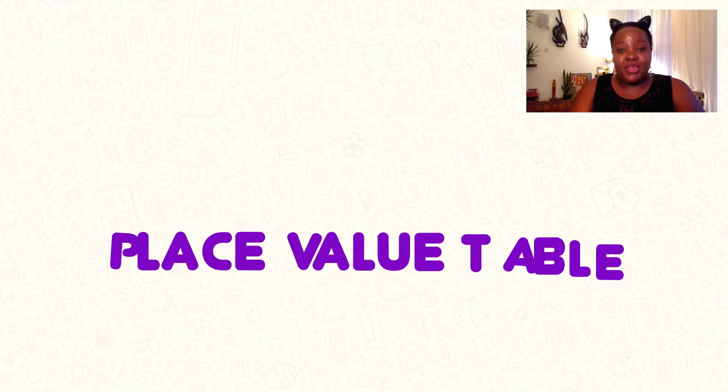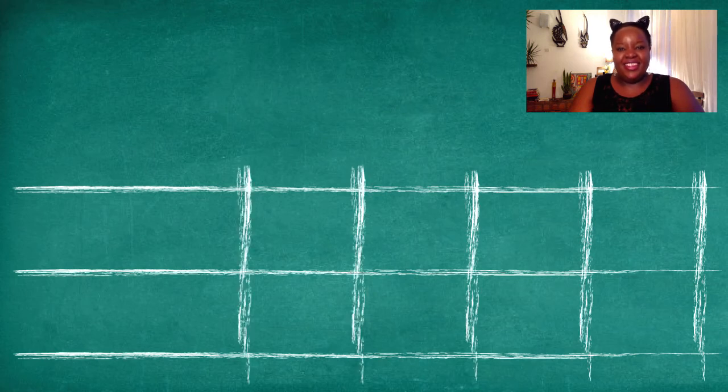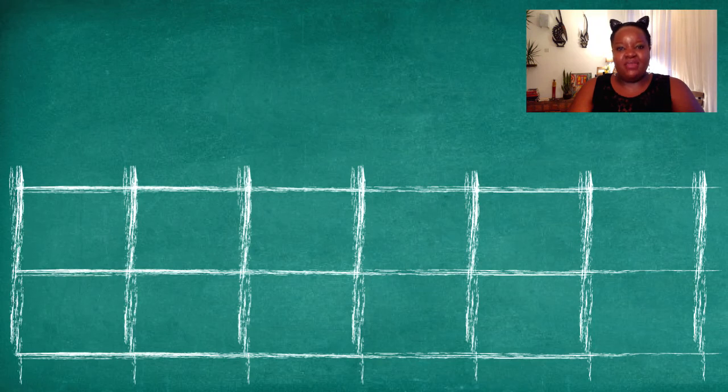To know the place value of a digit, we need to know and understand the place value table. Get your pens and paper ready. I want you to draw three lines from side to side — these are going to be our rows: one, two, three. Now I want you to draw seven columns from top to bottom, strong and vertical: one, two, three, four, five, six, seven.